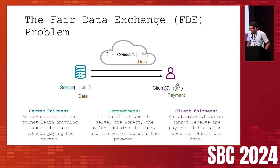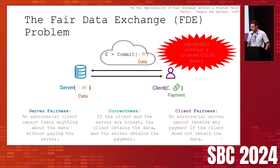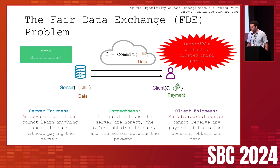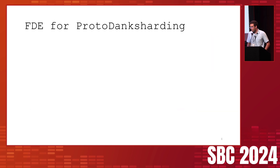Unfortunately, there is a well-known impossibility result from the late 90s: it's impossible to achieve all three properties without a trusted third party. But the name of this conference is Science of Blockchain, so we do have blockchains as our trusted third party, which gives us hope. Before explaining how we use blockchains, let me motivate this problem further.